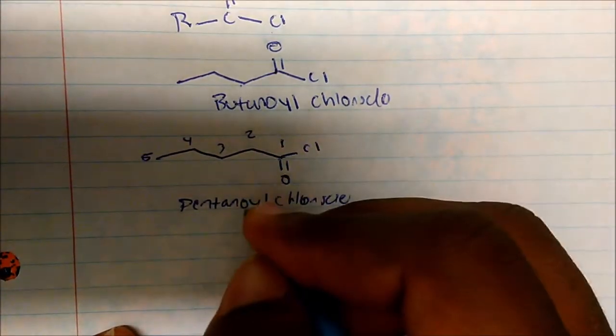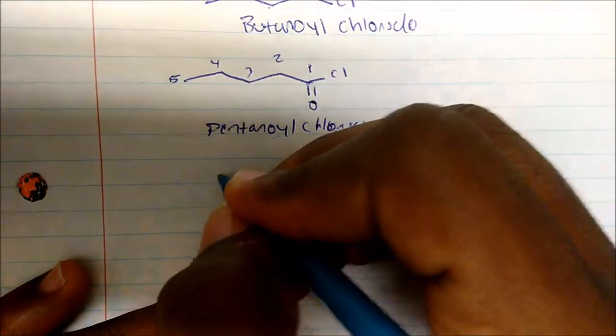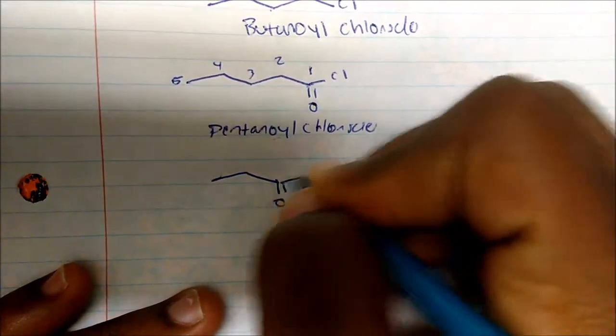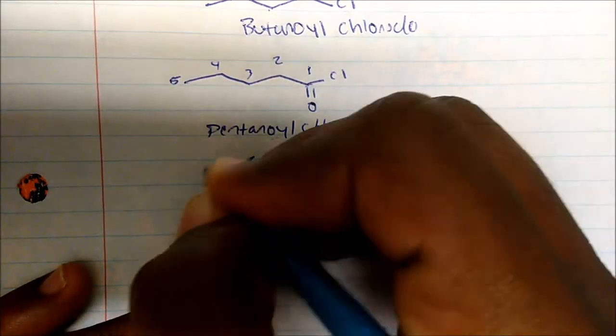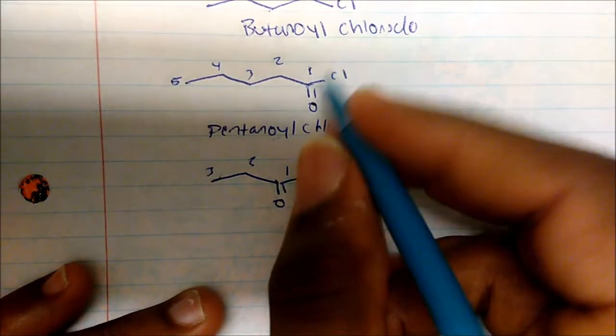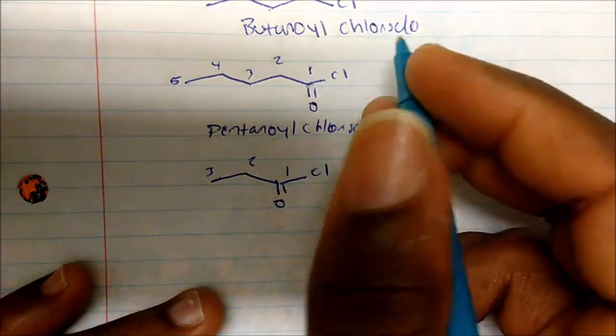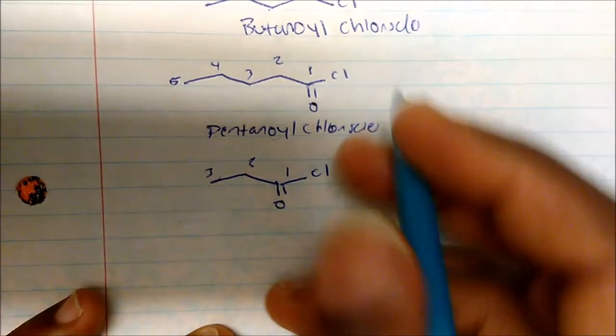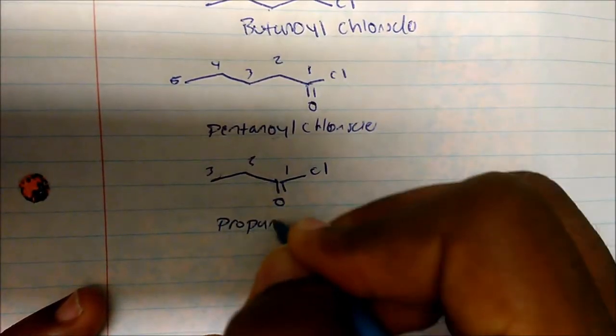Same thing for this. We call this carbon one, two, three. This is propanoic acid, or you could call this propane. But because it's an acid chloride we drop the E, so this becomes propanoyl chloride.